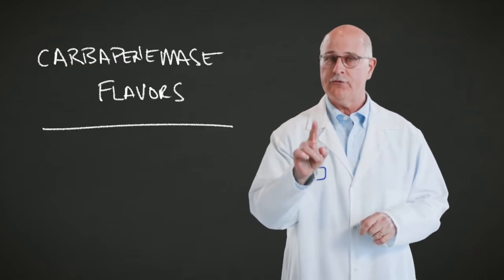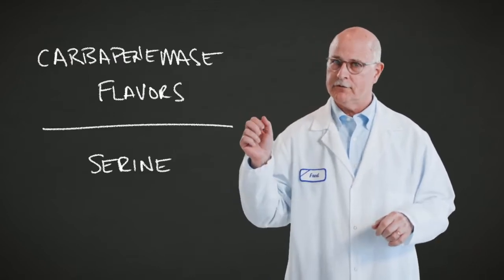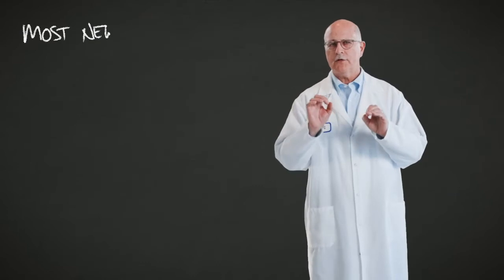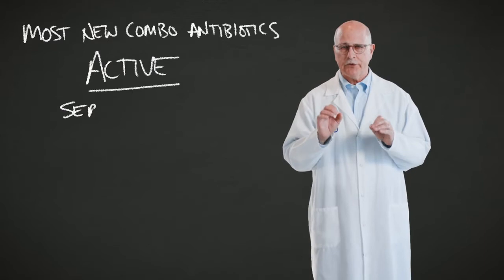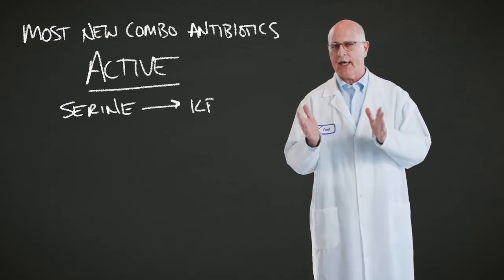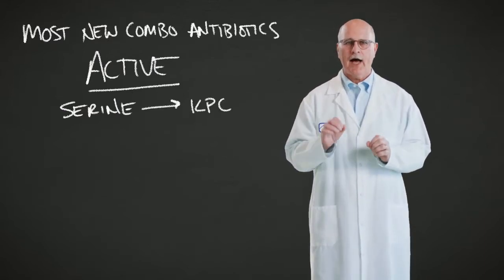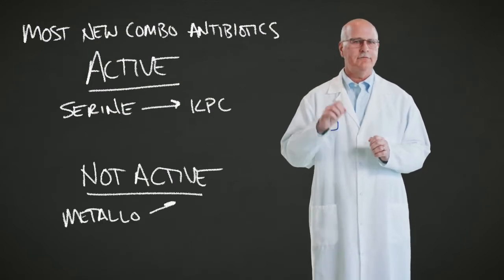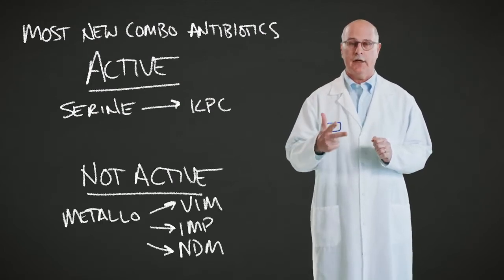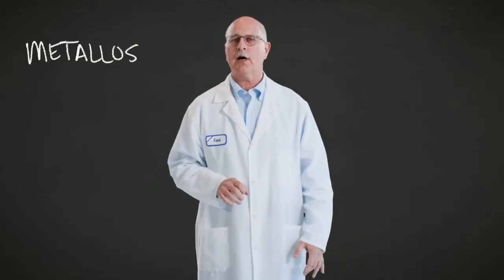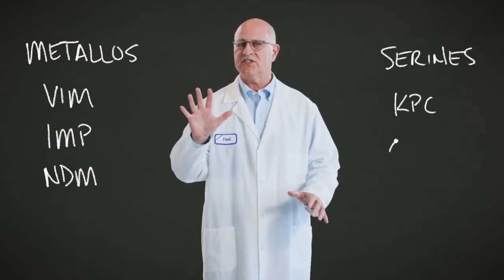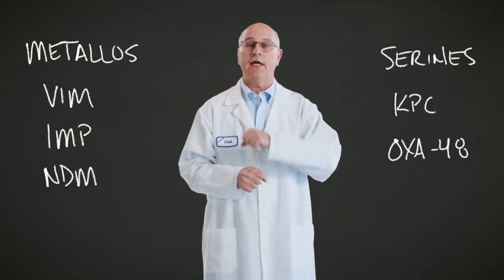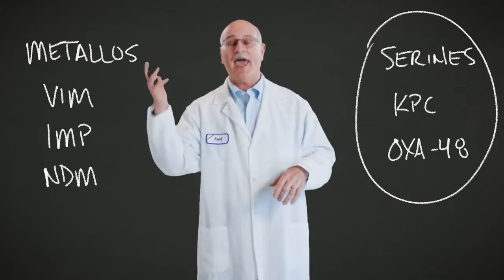So here's the key. The carbapenemases come in two flavors: serines and metallos. Most of the new combination antibiotic drugs are only active against the serine flavor of the carbapenemases, just like KPC. They are not active against any of the metallos — that is the VIMs, the IMPs, or the NDMs. That's where expert CARB-R comes in. It calls out all five families of carbapenemases separately, so it does differentiate between the serines and the metallos.